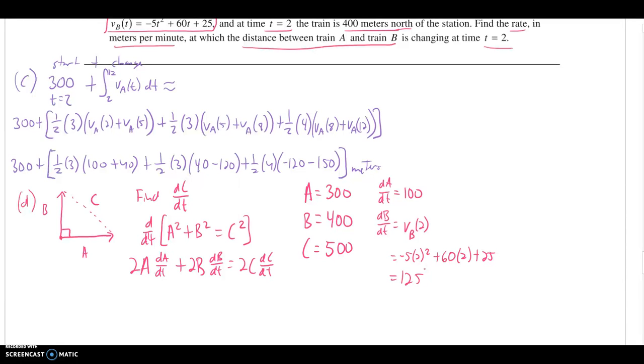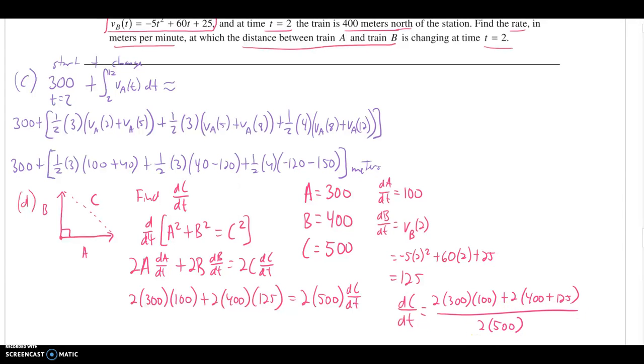We would have two times 300 times 100 for the DA DT, plus two times 400 times the 125 for the velocity of train B, equals two times the current distance between them, times the thing that we want. Easy way to finish up this problem. We need the value for this. So just make sure, simplify if you want to, simplify any little parts. Again, you could divide out that two at the very least. Up to you how you choose to go through this. But if I just divide both sides by that two times 500, I am done right there. Only thing I would really want, and the DC DT notation gives it to you, are the units for that. The distance units are meters versus time. In this case is minutes. So we'll have meters per minute. And that problem we can say is done right there.